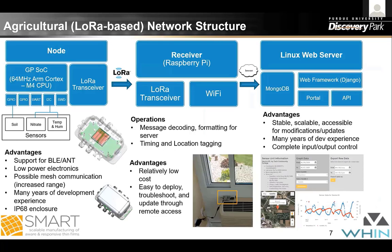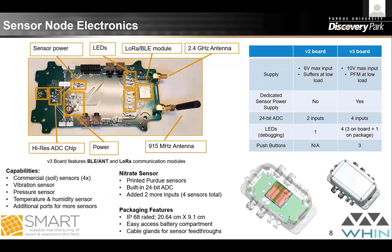On the question of whether a Linux web server is mandatory: what we deploy in the field at the farmer's location is the Raspberry Pi. We host the server on the Purdue infrastructure, which receives measurements from the Raspberry Pi through the Wi-Fi internet connection at the farmer's or collaborator's location. The Django framework can likely be hosted on other types of servers as well.